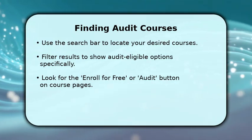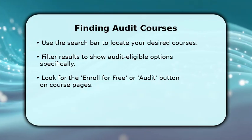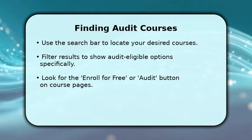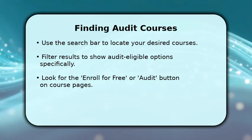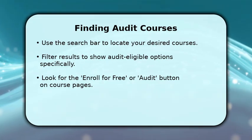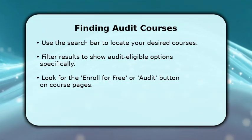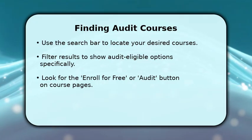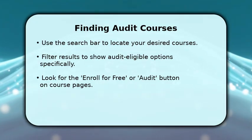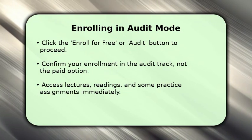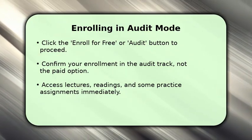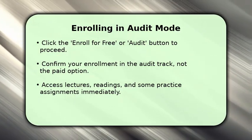When you click on a course, carefully scan the enrollment options. You're looking for a clear Enroll for Free or Audit button, which indicates the course offers this learning path. Not all courses have this option, so check carefully. Once you've found an audit-eligible course, simply click the Enroll for Free or Audit button.